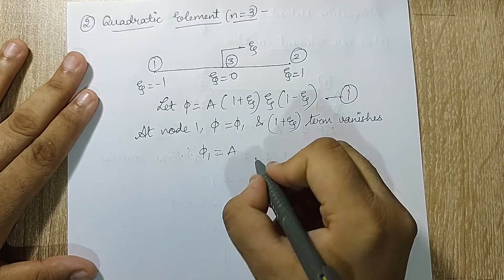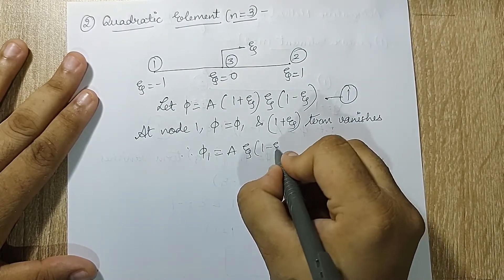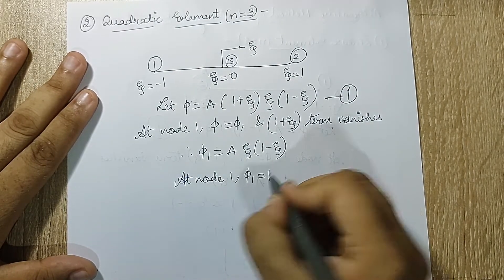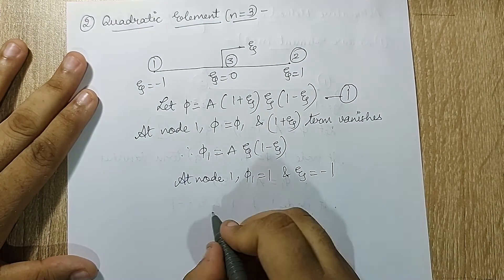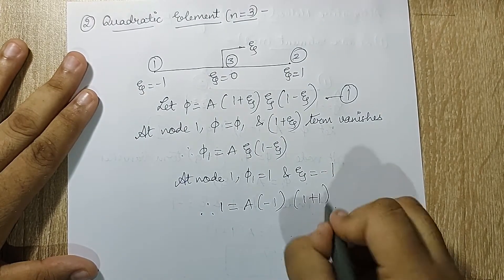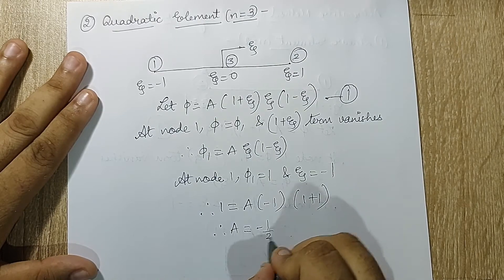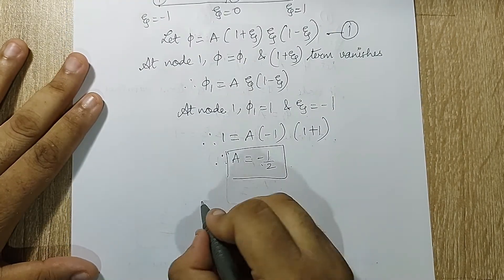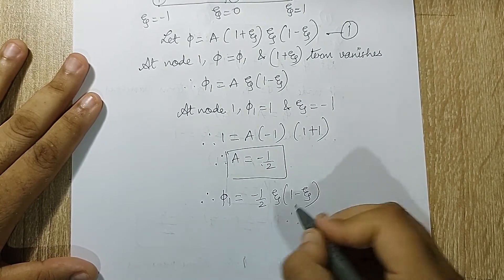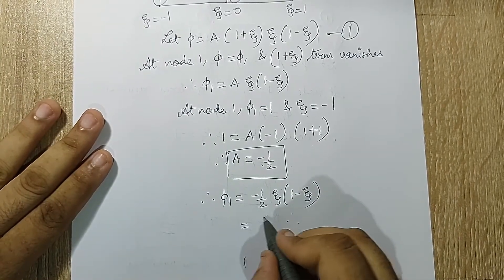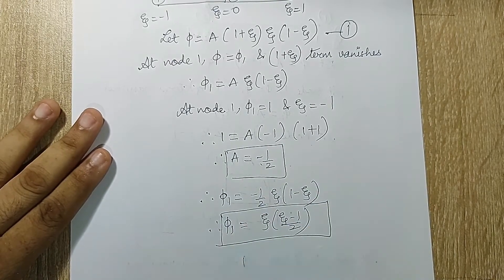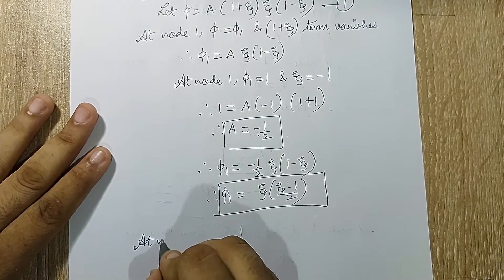Therefore φ₁ = a·ζ·(1 - ζ). At node 1, φ₁ = 1 and ζ = -1, so 1 = a·(-1)·(1 + 1) = -2a, giving a = -1/2. Substituting, φ₁ = (-1/2)·ζ·(1 - ζ) = ζ·(ζ - 1)/2.